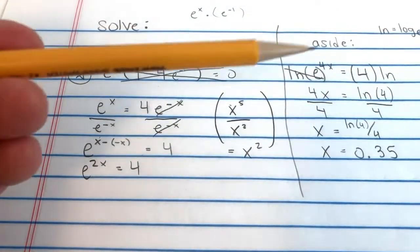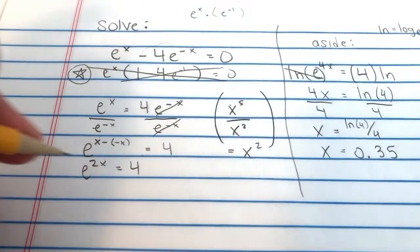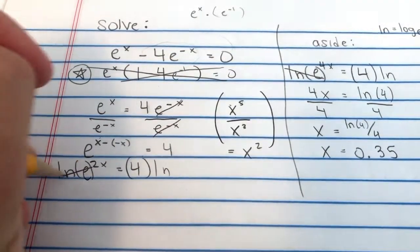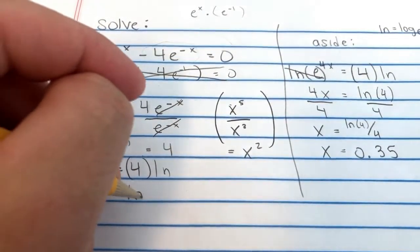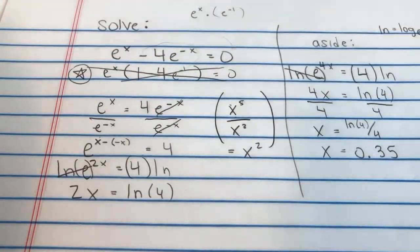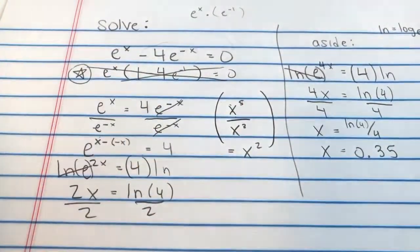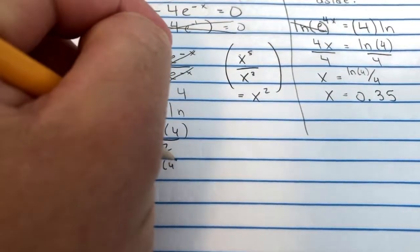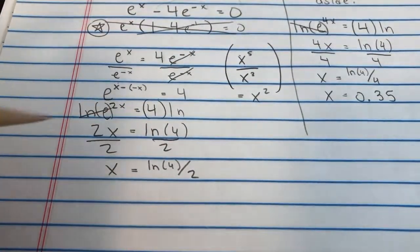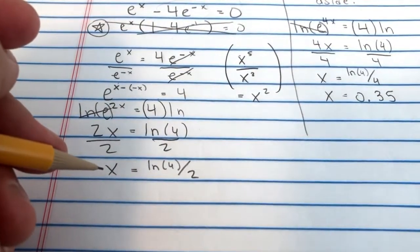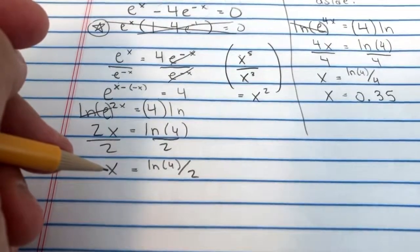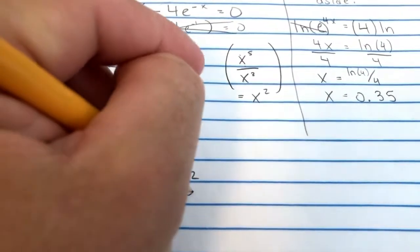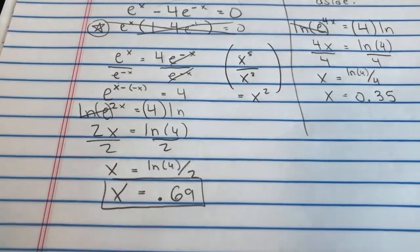And, hey, well, this is very similar to what we did on the aside here. So, we're going to Ln both sides. Ln and E cancel. So, we have 2x equals Ln of 4. And, we'll divide by 2. And, we're just left with x equals Ln of 4 over 2. And, that is, obviously, something we plug into a calculator. You can't do this in your head. x is about 0.69. Okay?